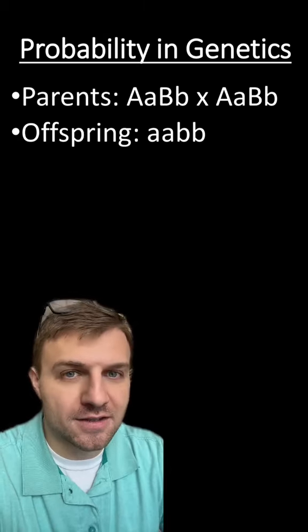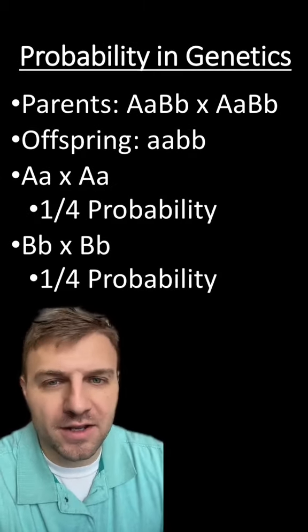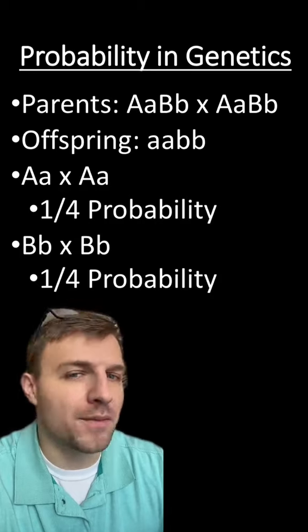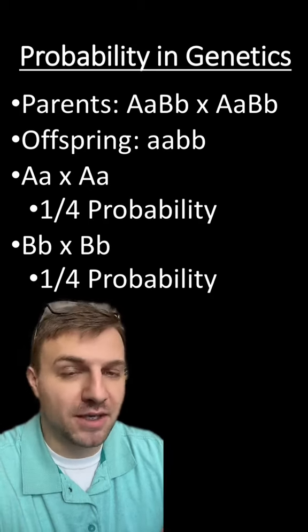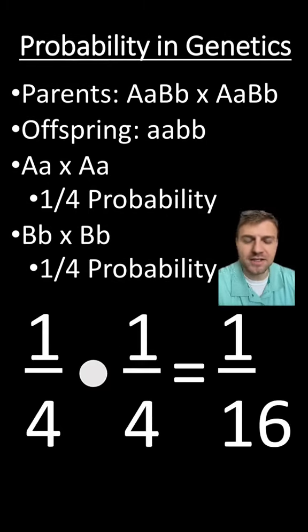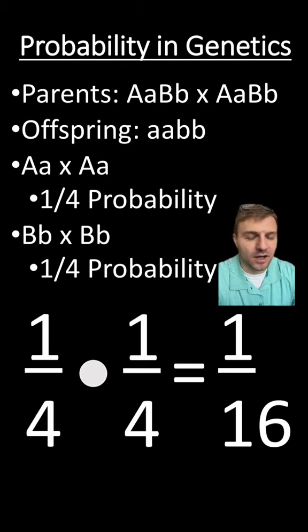Again, it would be a one in four chance. So instead of writing out the whole Punnett square, we can take these two probabilities, the one in four probability for the A and the one in four probability for the B's and multiply them together. So we take one out of four times one out of four, and our answer is one out of 16.